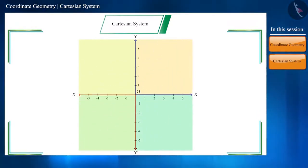These X and Y-axis divide the plane into four parts. These parts are called quadrants. These are named in the anti-clockwise direction as follows. The first part is called first quadrant.